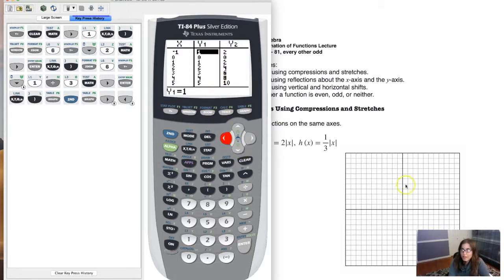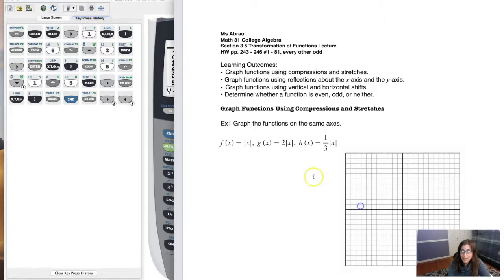These are all ordered pairs that are going to show up on our graph. So I'm going to hop back to my written lecture notes, and we're going to graph these and then talk about what's been happening as we adjusted this coefficient that was out in front of this absolute value symbol. So I'll see you in a little bit. Bye.